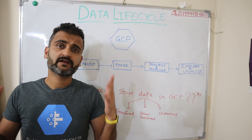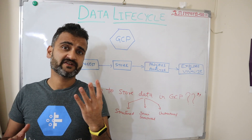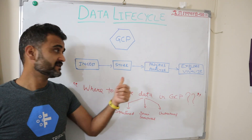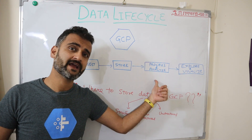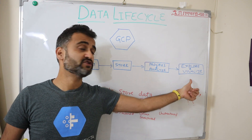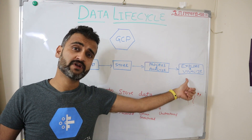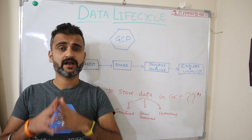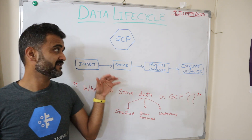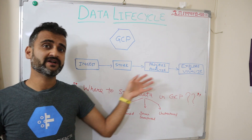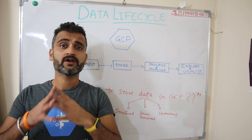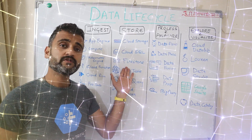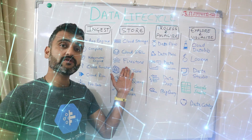Any standard data lifecycle has four major steps: ingest the data, store the data, process and analyze, and eventually explore and visualize the data. In this video, we will understand how we can create this end-to-end data lifecycle using Google Cloud Platform products for every step.